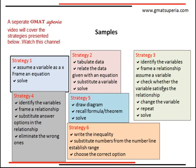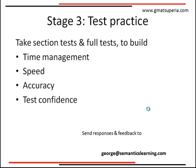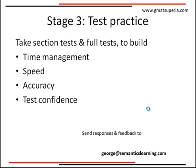To develop strategies like this, you need to work through lots of problems. In Stage 3, take around 5 to 6 full computer adaptive tests, with section tests in between. Your aim is to build time management skills, speed, accuracy, and overall test confidence. Be mentally prepared to concentrate for more than three and a half hours across integrated reasoning, the essay, verbal, and math. Once you consistently hit your target score across 4 to 5 tests, you are ready. Best of luck!